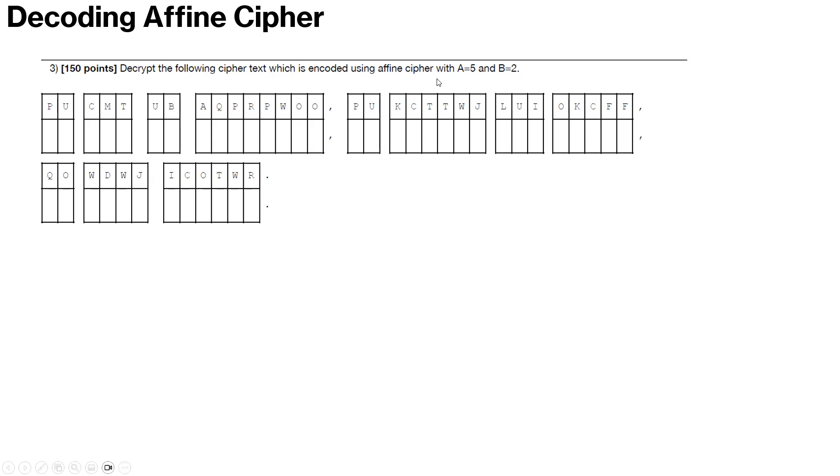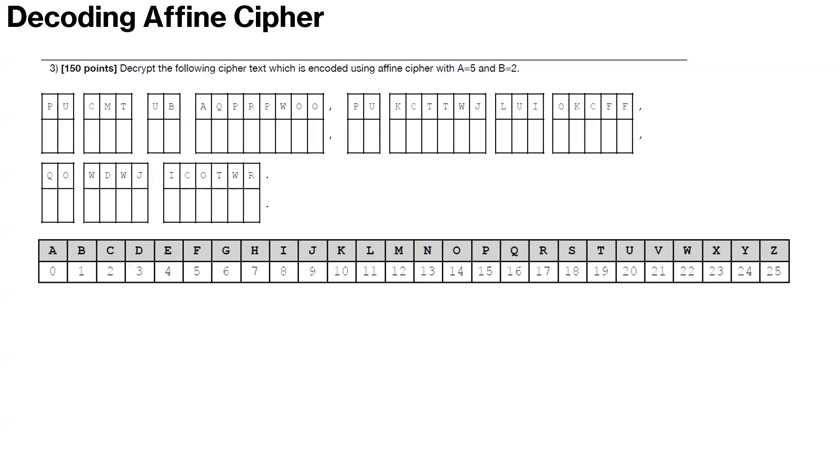As you know, with an affine cipher we use a formula for encoding, and before that formula we need to know the relation between the alphabets and the numbers. So generally this table gives you the relationship between the alphabets and the numbers, and the encoding is done using a formula.